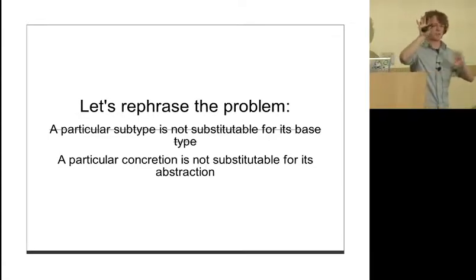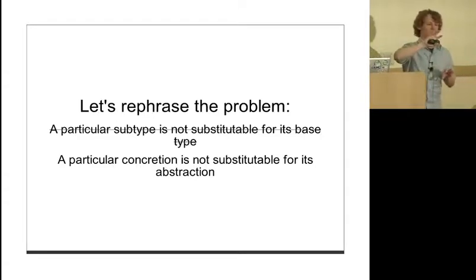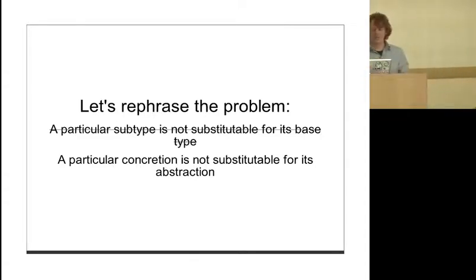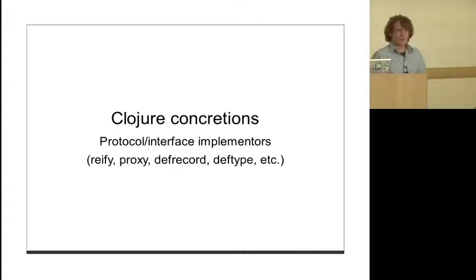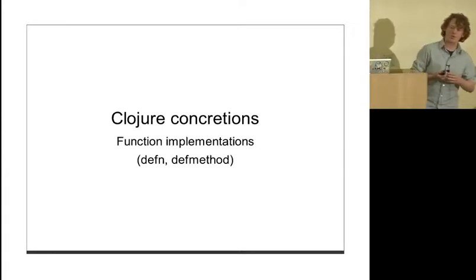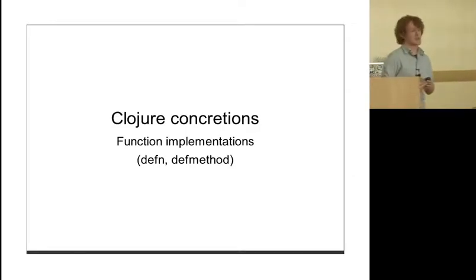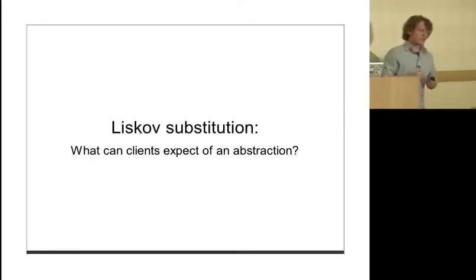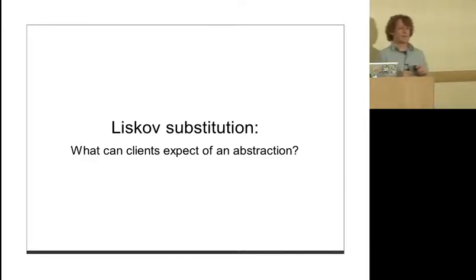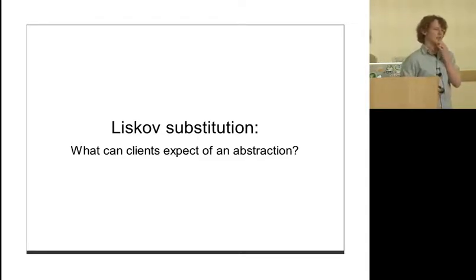Let's change our problem statement from 'the subtype is not substitutable for its base type' to 'a particular concretion is not substitutable for the abstraction' - because by definition, a subtype is substitutable for its base type. In our stupid example, a square is not actually a subtype of a rectangle by definition. In the language we've munched the concepts together and say subclasses are the same as subtypes, but it's not really true. In Clojure, concretions are protocol and interface implementers - reify, proxy, defrecord, deftype. Liskov substitution is about expectations.